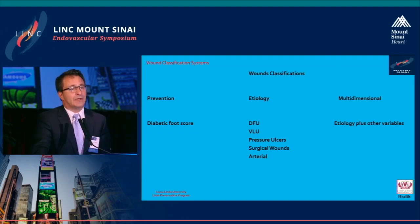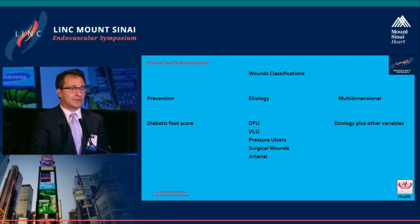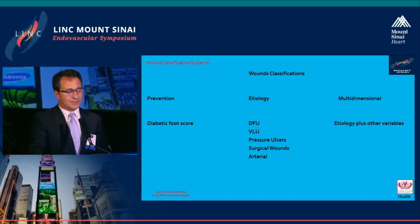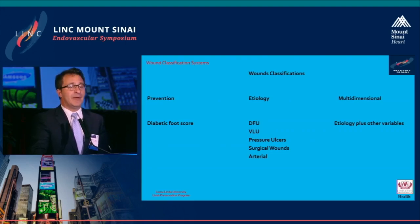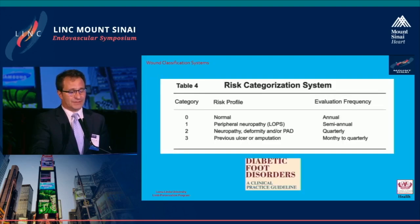Classification of wounds can be approached from the etiologic perspective: diabetic foot ulcers, venous leg ulcers, pressure ulcers, surgical wounds, or arterial ulcerations. Diabetic foot ulcers are the most studied and most classified, and there is a scoring system to try to prevent their development. There are also scales or classifications that incorporate multidimensional variables to stratify and guide how to approach certain situations.